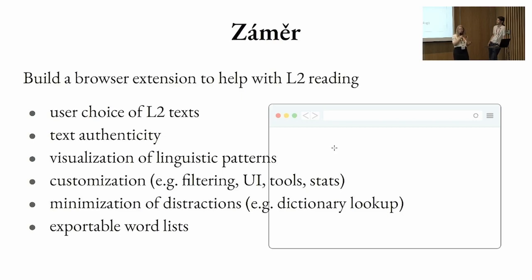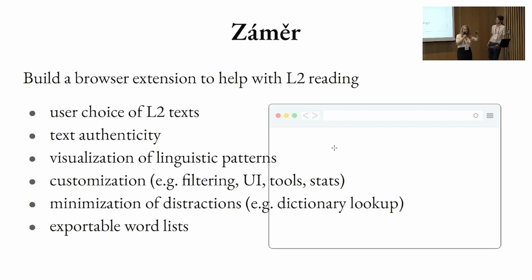The main goal of what we built was to provide a tool that can help users input whatever text they want. It's a browser extension, so it can be whatever authentic text you want. It can help us visualize these linguistic patterns and it can be very customizable. We wanted to build something that minimizes distractions so that you're not taken away from your page — something you can just click on, and it will show you information about a word you don't know so you can keep moving forward with your reading. And sometimes you want to export those word lists and practice them on your own.